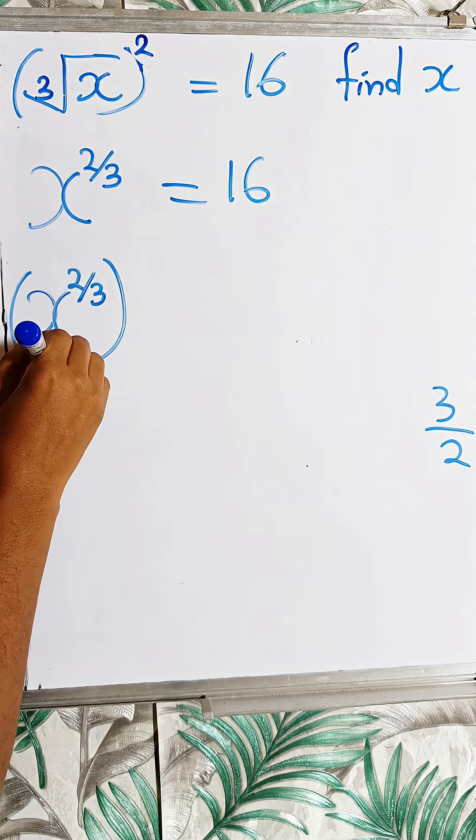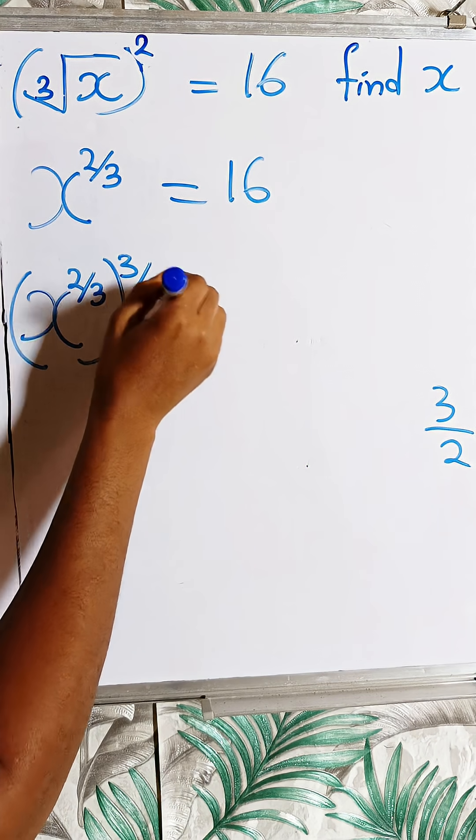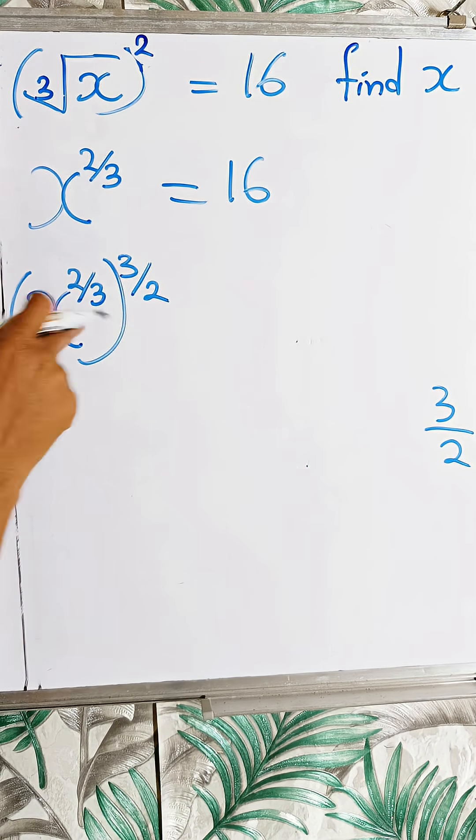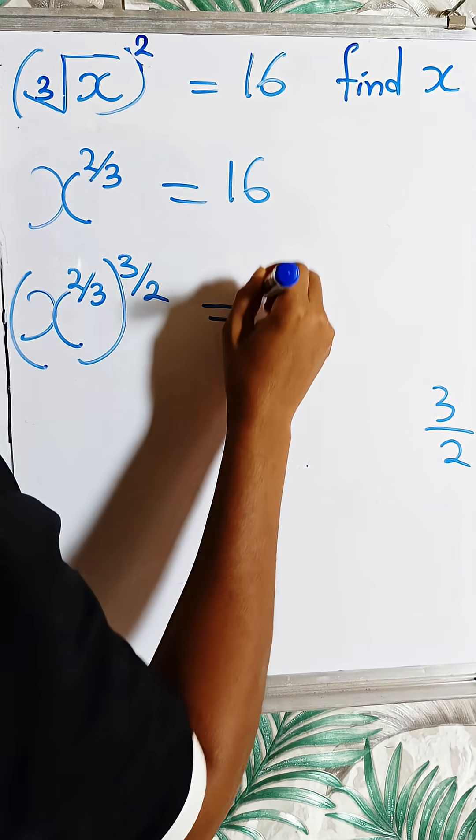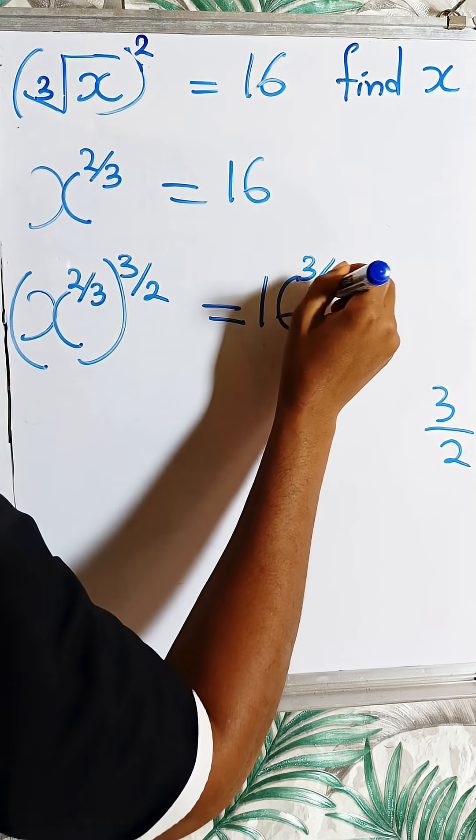and then I raise it to power 3 over 2, which is the reciprocal of 2 over 3. Now, this is equal to 16 raised to power 3 over 2.